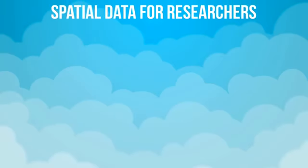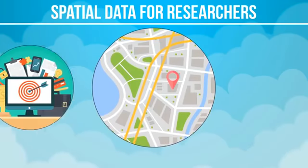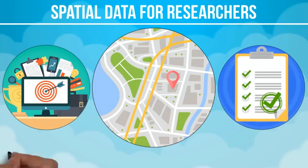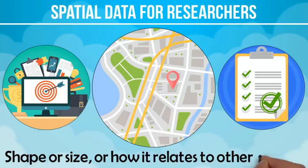Spatial data, also known as geospatial data, is information about the location of an object, its shape or size, or how it relates to other objects in space.